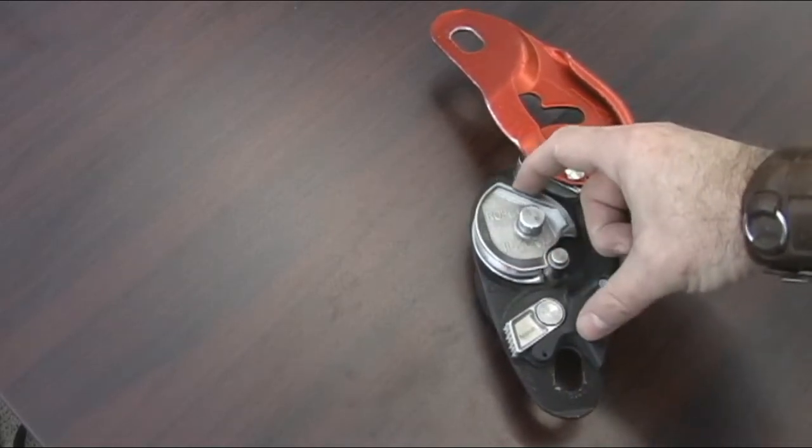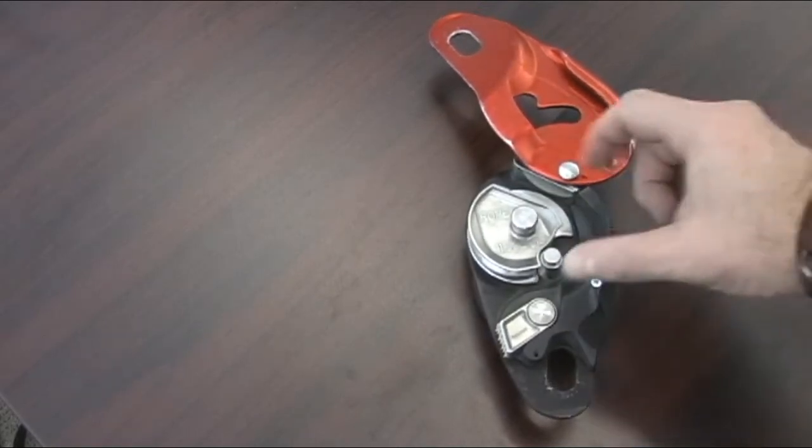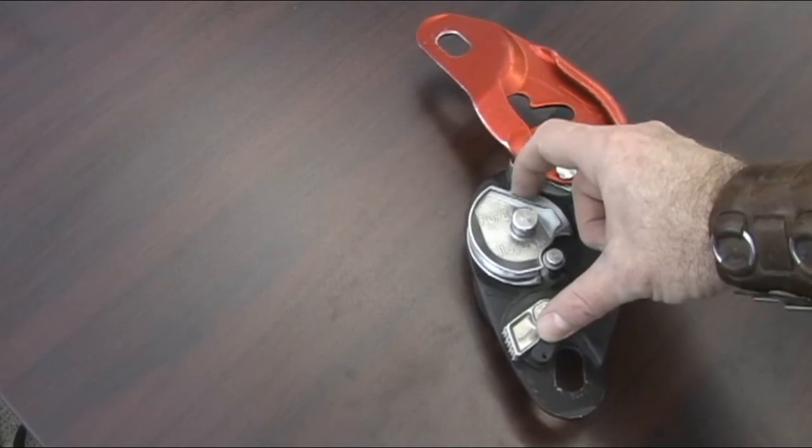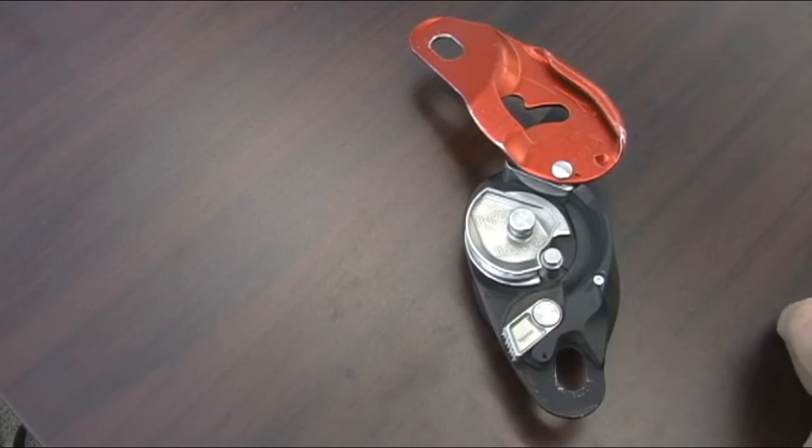As the rope feeds in, this cam pinches the rope against this plate. And it's on this cam that we're going to find our first safety feature. Right on this rim here is what's called the wear indicator. If you rub your finger along the wear indicator, you'll feel a small ridge. When you can no longer feel that ridge, this device is out of service.